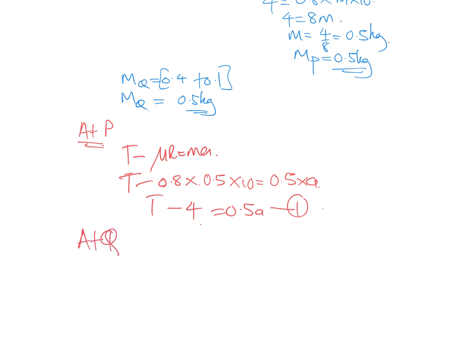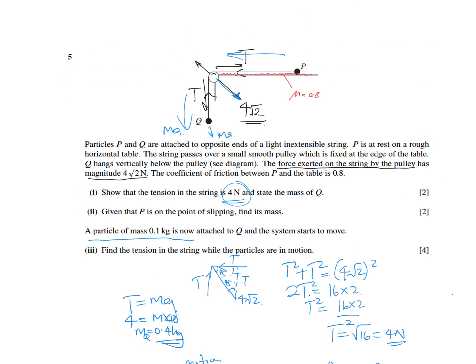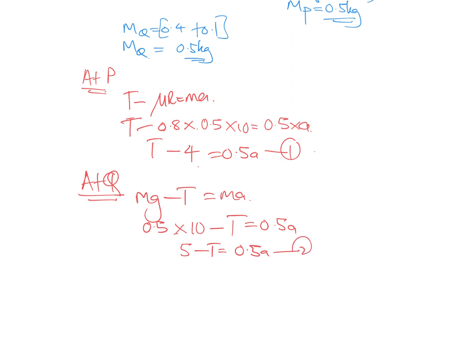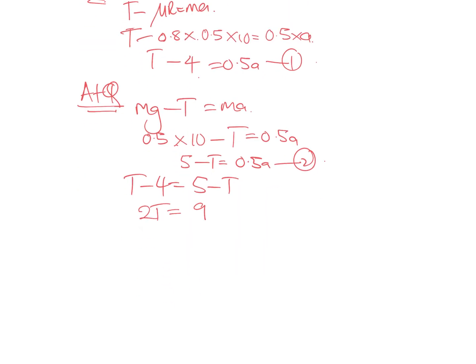For particle Q moving downward, the net force equation is mg − T = ma. So 0.5 × 10 − T = 0.5a, giving 5 − T = 0.5a. That's equation 2. Equating equations 1 and 2: T − 4 = 5 − T, so 2T = 9, therefore T = 4.5 Newton.